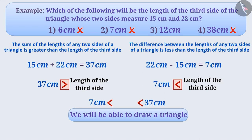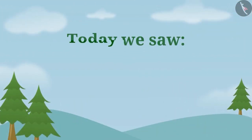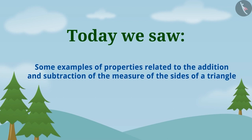In option 3, we are given the length of the third side as 12 cm. Since 12 cm is more than 7 cm but less than 37 cm, we will be able to form a triangle with these lengths. Therefore, the correct answer to the given question is option 3. Today we saw some examples of properties related to the addition and subtraction of the measure of the sides of a triangle. In the next video, we will see some misconceptions related to it.